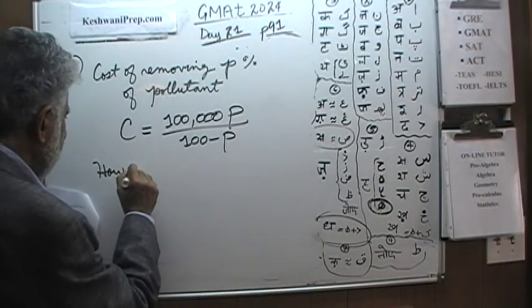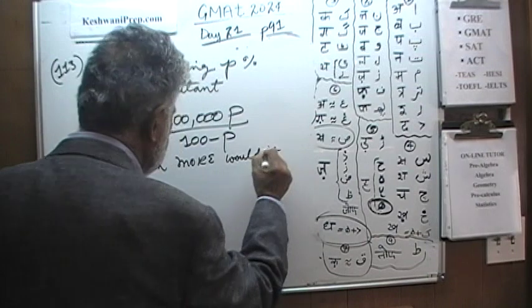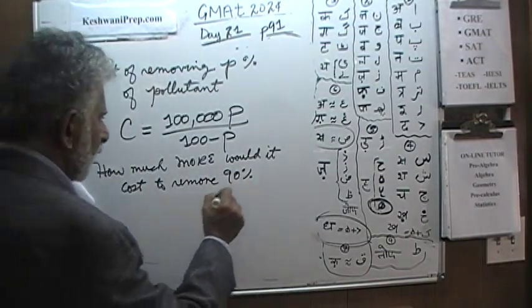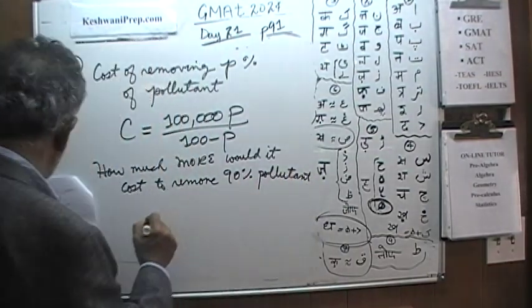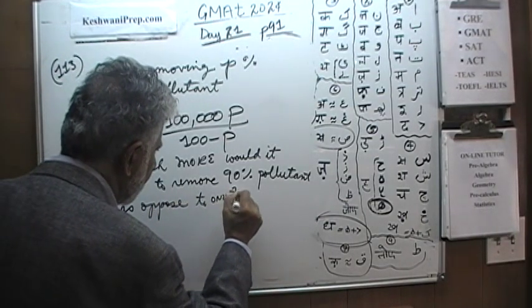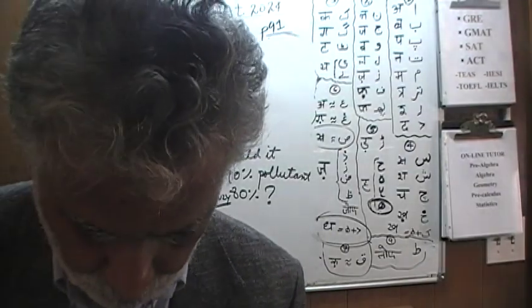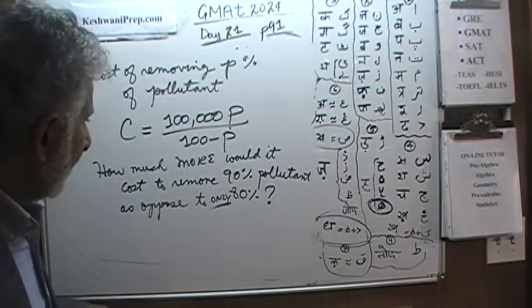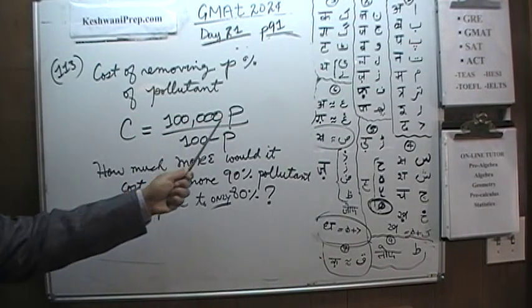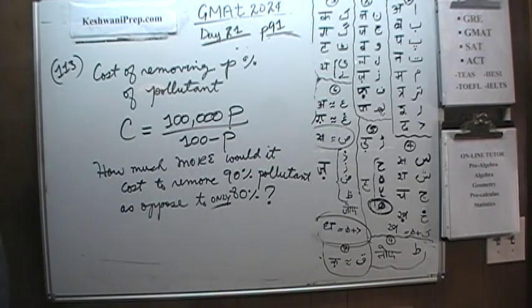The question is this: How much more would it cost to remove 90% of the pollutant as opposed to only 80%? So town has a choice as to how much they want to spend the money. And this is what we are dealing with. One more time I am going to read the problem to you. The cost of removing P percentage of pollutant is C equals 100,000 times P over 100 minus P. The question is how much more would it cost to remove 90% of the pollutant as opposed to only 80%. Go ahead and do it yourself.